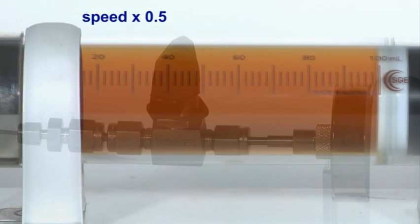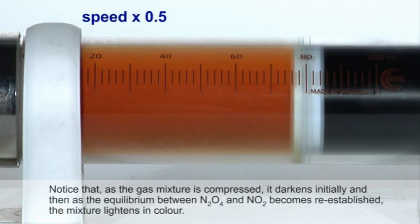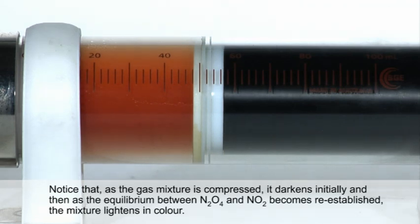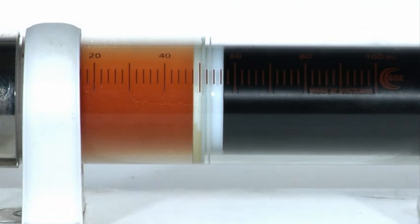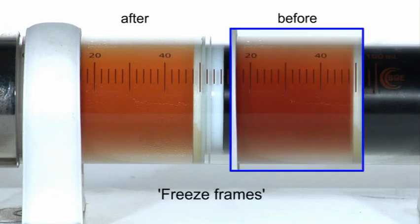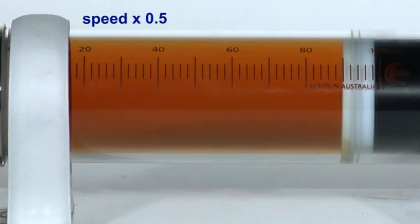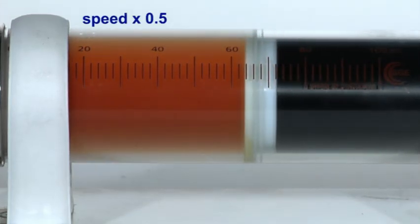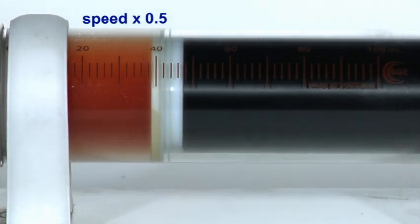When the mixture is compressed it initially darkens but as a new position of equilibrium between gaseous dinitrogen tetroxide and nitrogen dioxide is established, the color lightens significantly as a greater concentration of dinitrogen tetroxide is produced. This effectively lowers the pressure in the syringe.